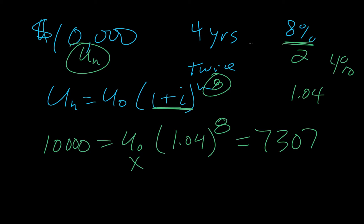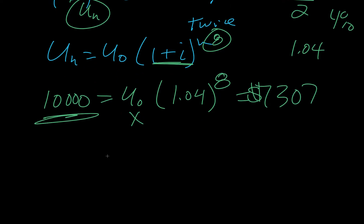Okay, and that's the amount of money that she needs to invest so that in 4 years, at this percent, being compounded twice a year, she'll end up with $10,000. Okay. And we'll keep going.